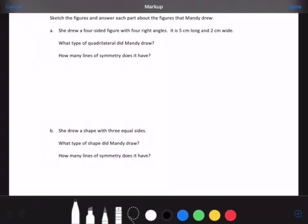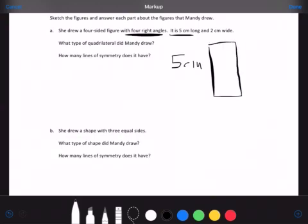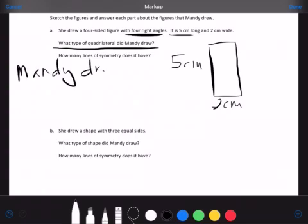If it has four right angles, it's either going to be a square or a rectangle. Since one side is five centimeters and the other side is two centimeters, it must be a rectangle. So what type of quadrilateral did Mandy draw? And we would write, Mandy drew a rectangle.